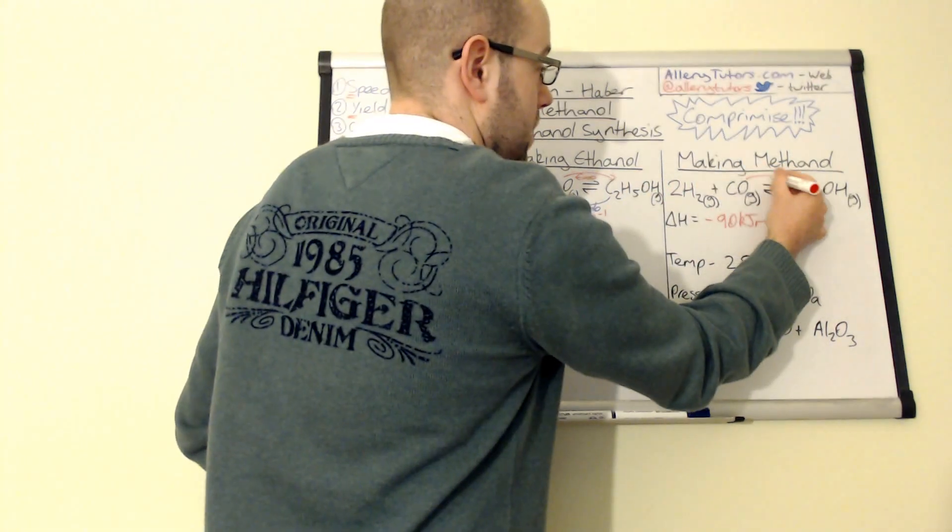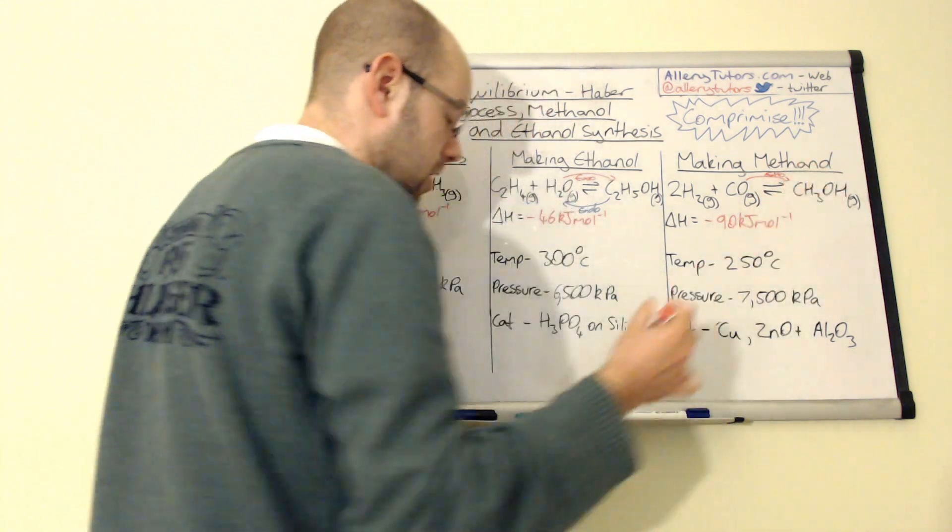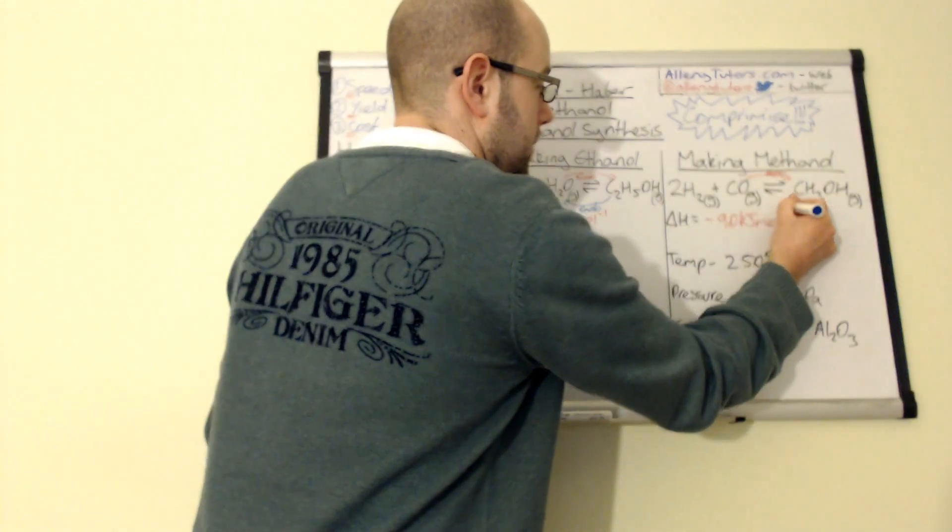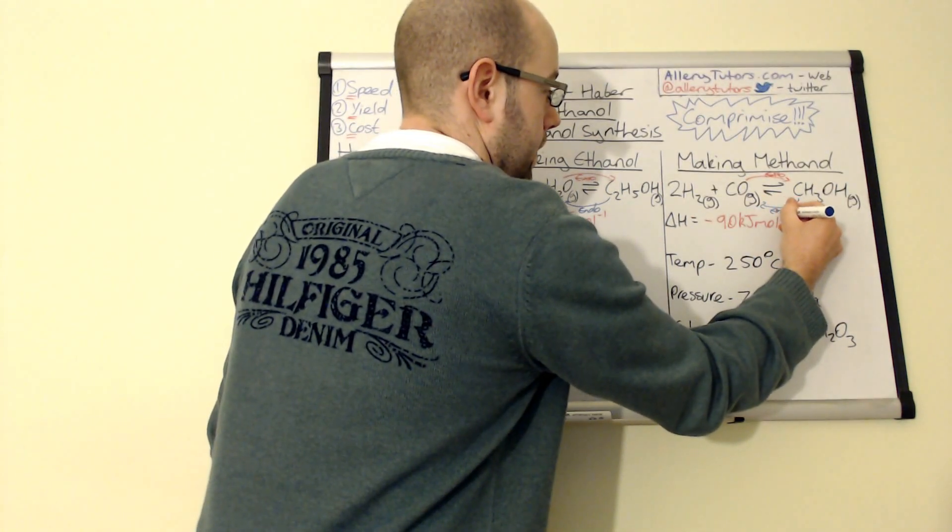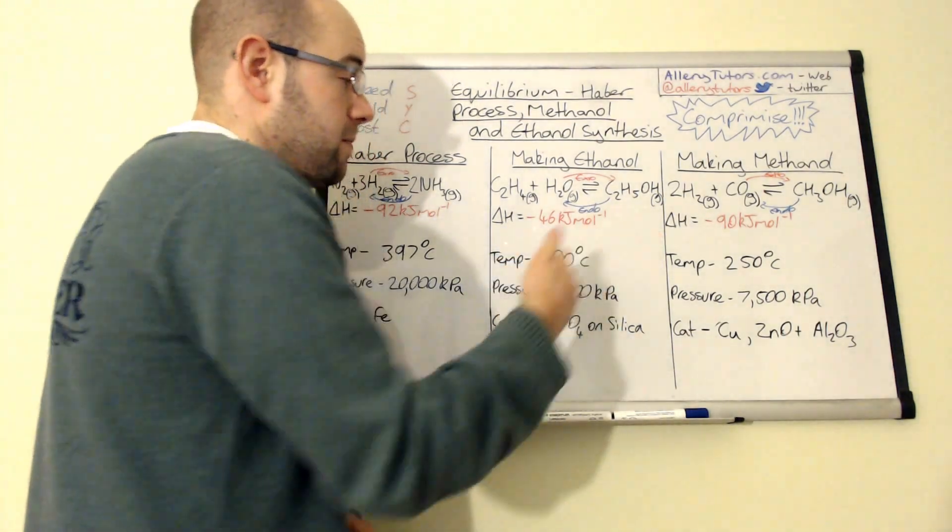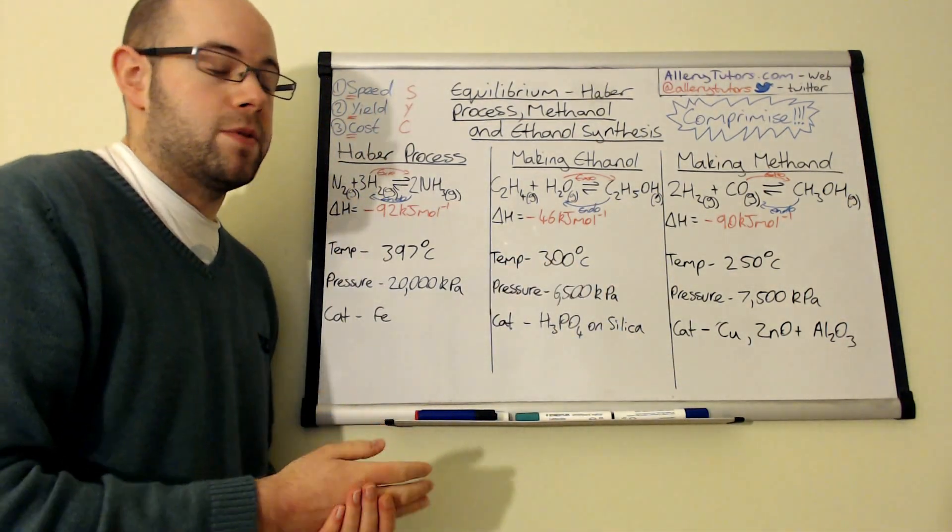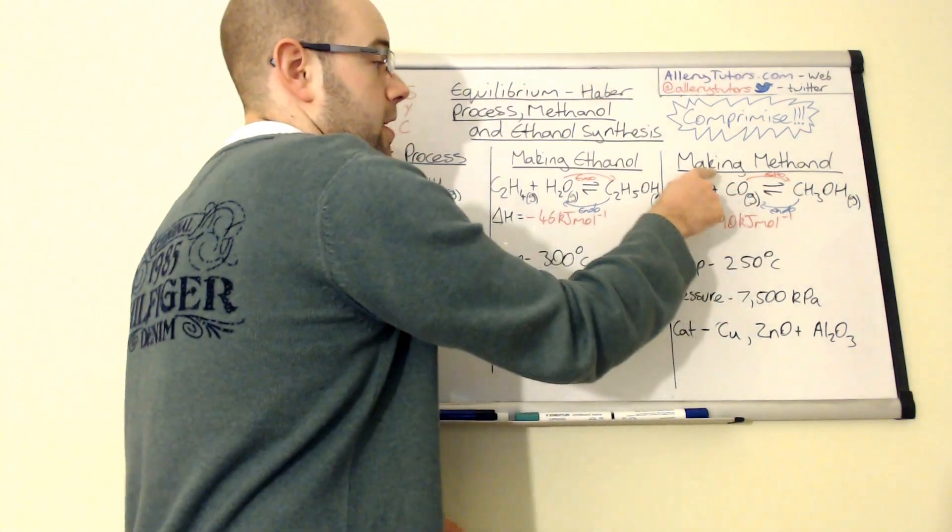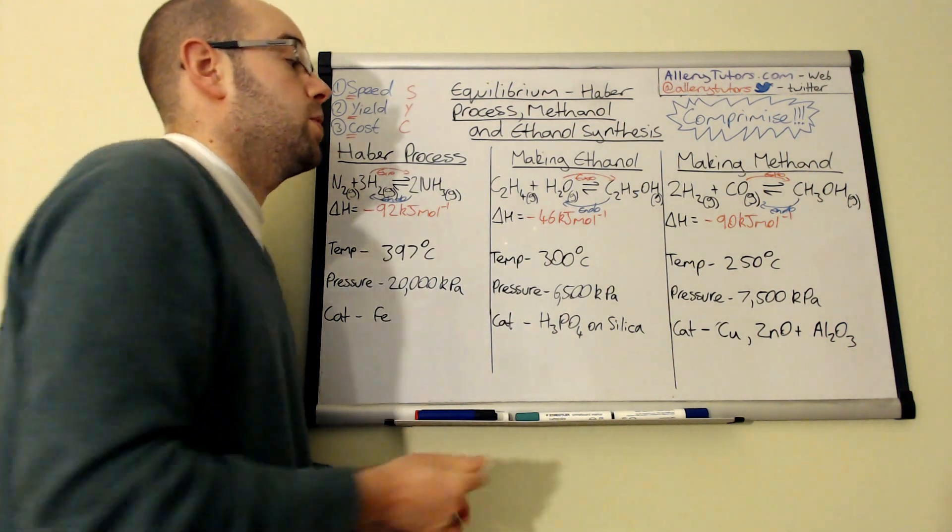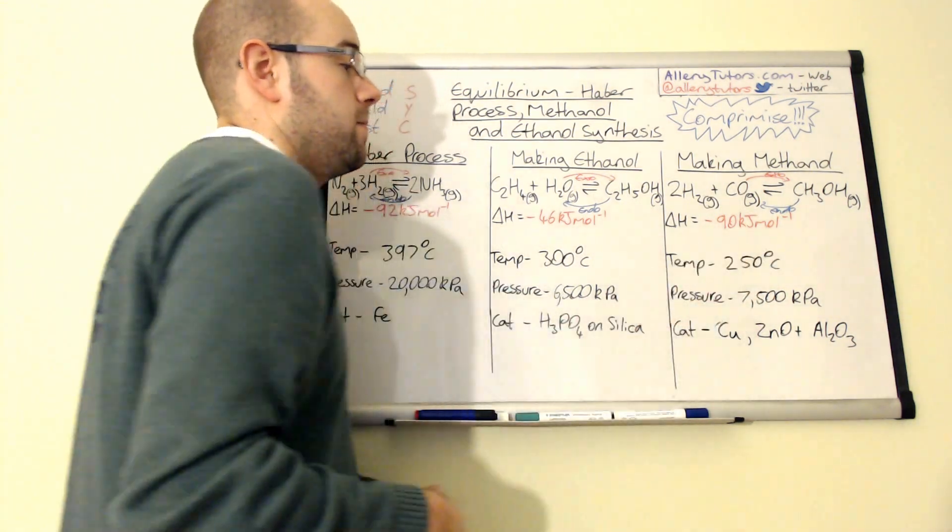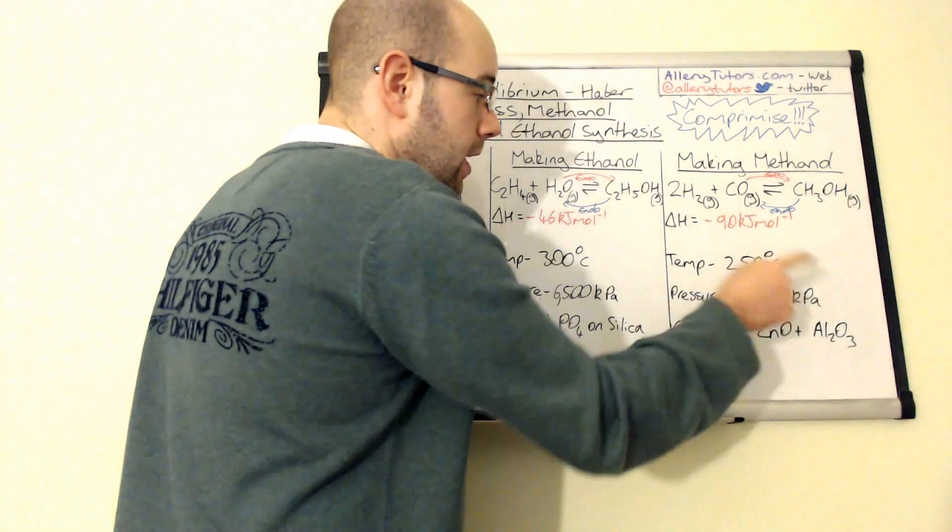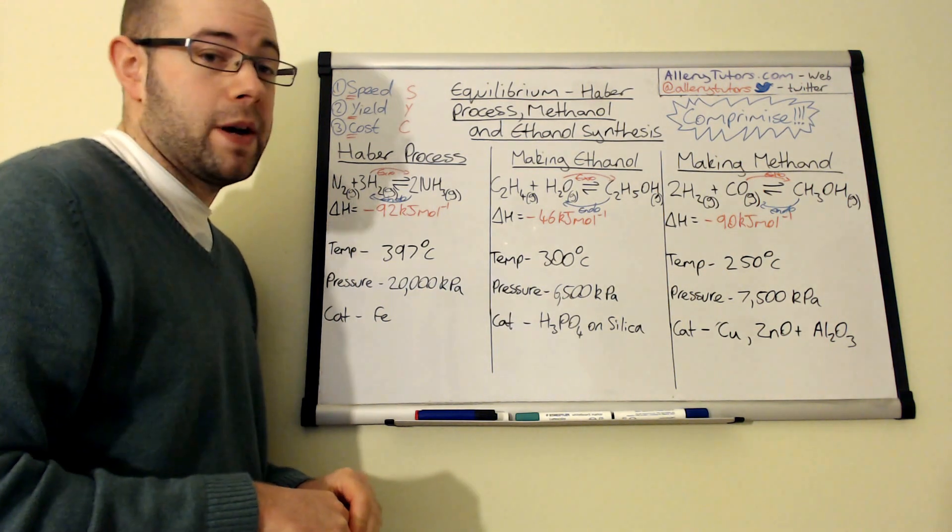If we have a very quick look at this, you can see that the forward reaction is exothermic and the backwards reaction is endothermic. Again, for the same reasons before, if we increase the temperature then it will shift in the endothermic direction, which is to the left. It's the same exact reasons. So we come up with a compromise temperature of 250 degrees Celsius.